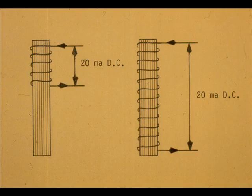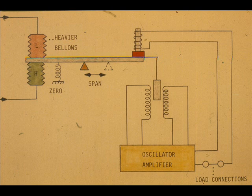An increase in the number of turns increases the feedback motor force for a given current. Range changes that cannot be achieved with the zero and span adjustments require a stronger measuring device and an increase in the number of turns, whether it is a bellows, diaphragm, or capsule.